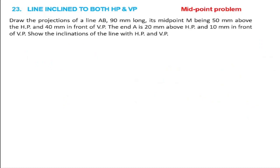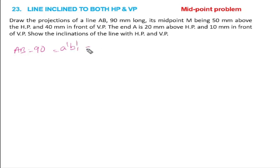Problem number 23: Draw the projections of line AB, 90mm long. Its midpoint M is 50mm above HP and 40mm in front of VP. The end A is 20mm above HP and 10mm in front of VP. Show the inclinations of the line with HP and VP. Line AB is 90mm, equal to A' B1' equal to A-B2.